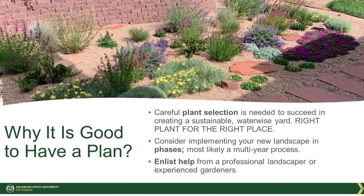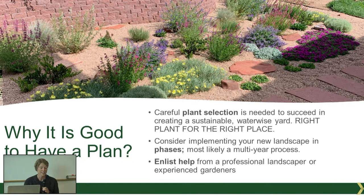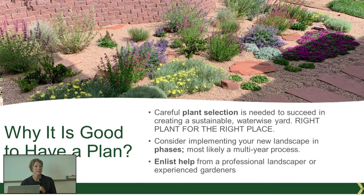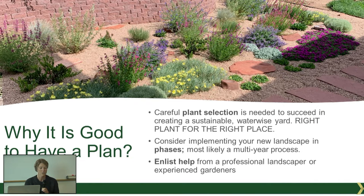I'm going to talk for a couple of minutes about planning. Before you start tearing up your yard and buying a bunch of plants, it's really helpful to spend some time in the design phase — selecting appropriate plants, shrubs, trees, grasses. The goal is the right plant for the right place. By spending a little time in this planning phase, you're going to save yourself time, money, and effort. You're also more likely to end up with all of your plants having fairly similar water needs, making it easier to maintain. Your design could be a professional design or a do-it-yourself sketch with a plant list, but it is important to have a plan.